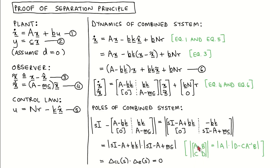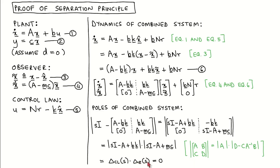We now use a property of the determinant of a matrix, which says the determinant of a block matrix with blocks A, B, C and D — where A and D are square matrices — is given by the determinant of A times the determinant of D minus C times the inverse of A times B. After applying this to the blocks of the matrix, we see that this equals the determinant of the top left block times the determinant of the bottom right block. We recognize the first determinant as the characteristic polynomial of the regulator designed separately from the observer, and the second as the characteristic polynomial of the observer designed separately from the regulator.